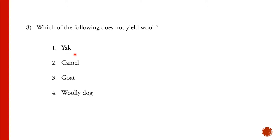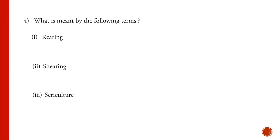Which of the following does not yield wool: yak, camel, goat, or woolly dog? As learned in the lesson, yak is a wool-yielding animal, camel also gives wool, and goat also gives wool. So the answer is woolly dog — woolly dog does not give wool.